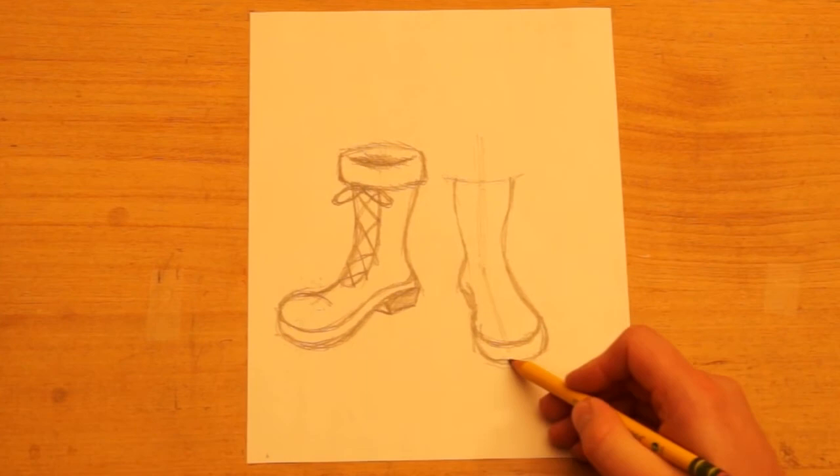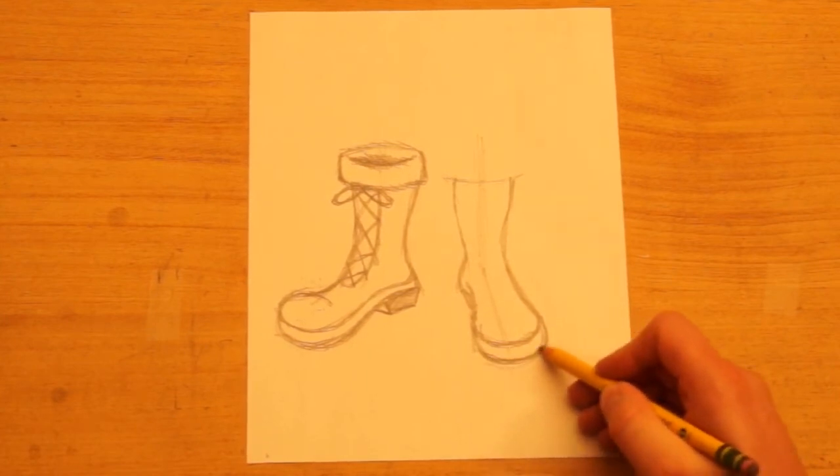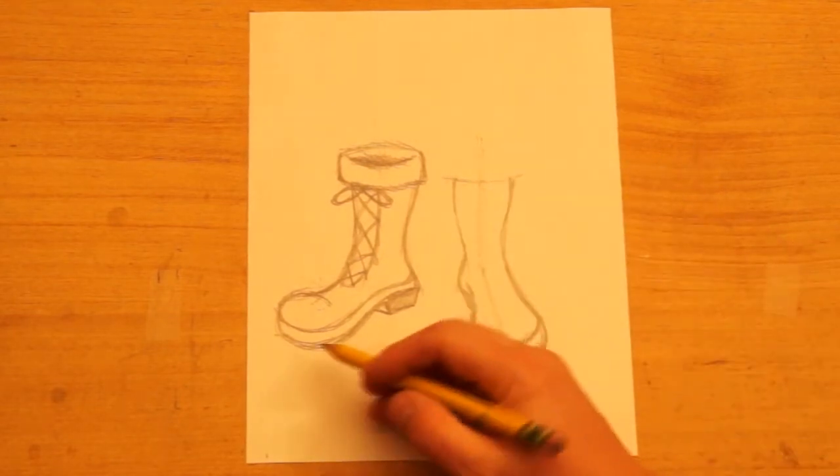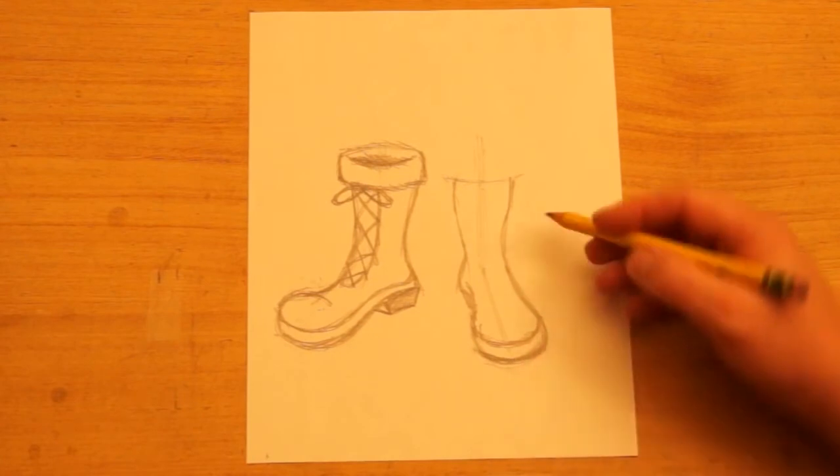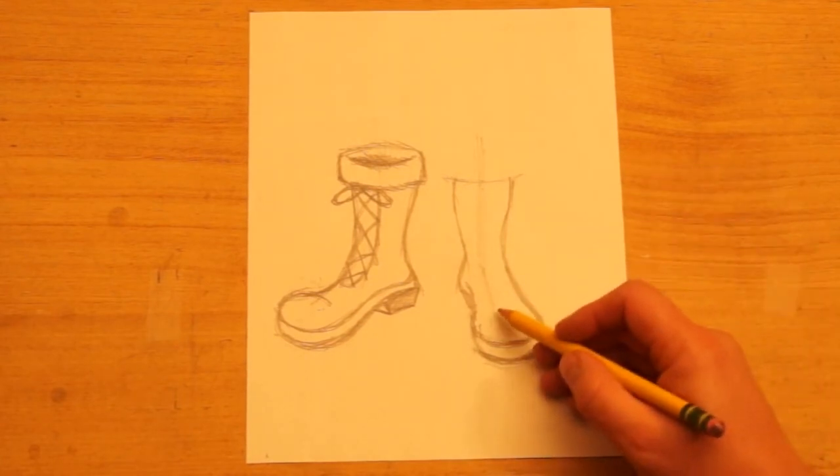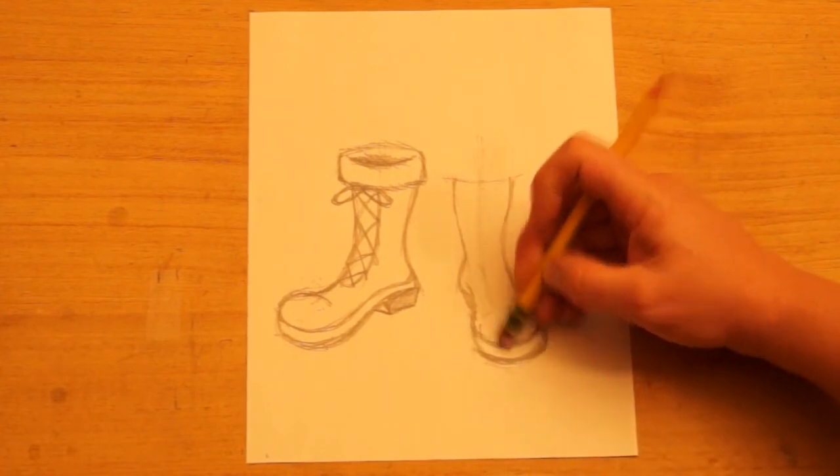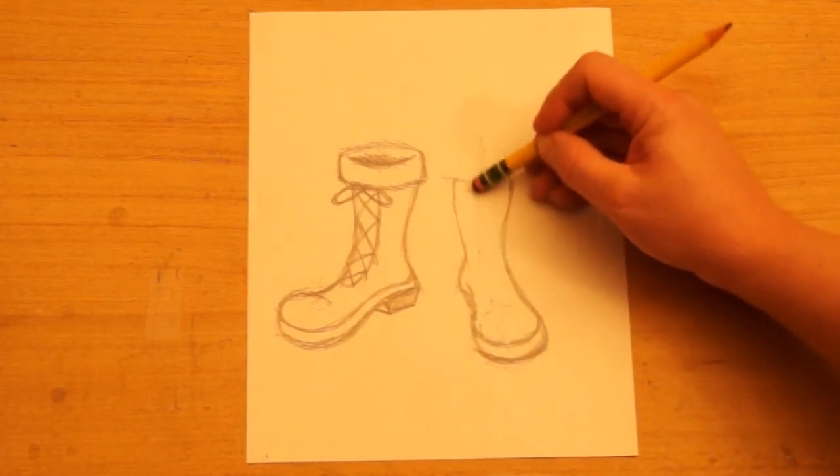I'm going to darken the sole of the boot down here, just like I did over here. Let's put a curve about where this curve would be right back in here. Actually, before that, I'm going to erase the center line. We don't need that anymore.